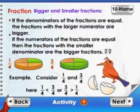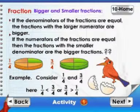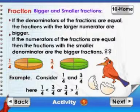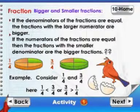Bigger and smaller fractions: if the denominators of the fractions are equal, the fraction with the larger numerator is bigger. If the numerators of the fractions are equal, then the fraction with the smaller denominator is the bigger fraction.